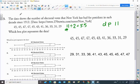Hey everybody, Mrs. Bianchi. The data shows the number of electoral votes that New York has had for president in each decade since 1912. Here's the data. Which box plot represents the data? So what I did is I took each of these and I put them in order from least to greatest. So here they are in order from least to greatest. You should write this down on your piece of paper by the way, this list right here.